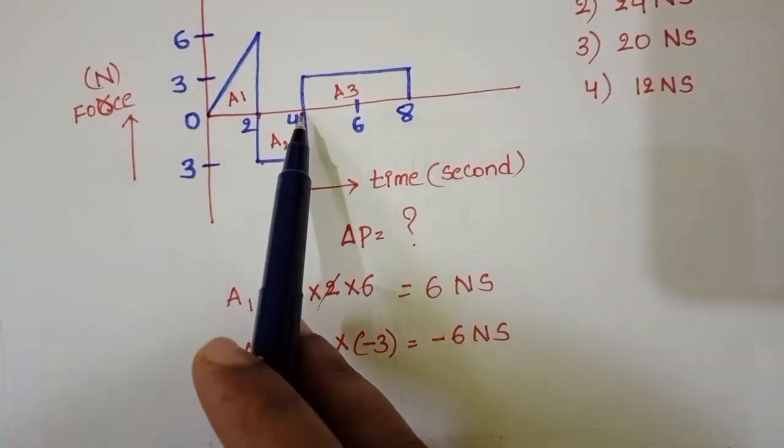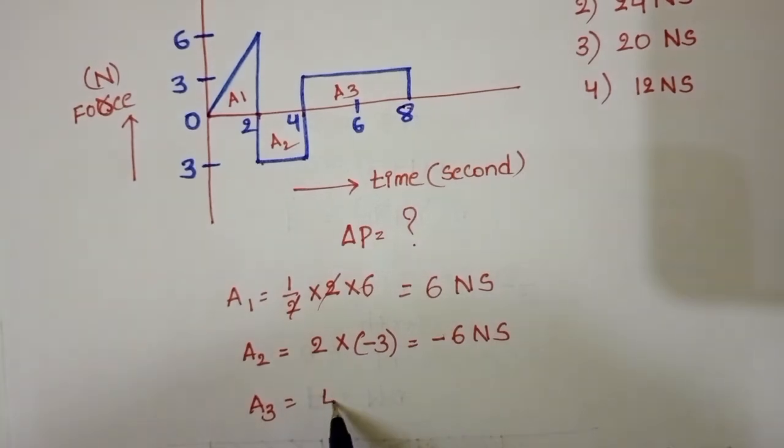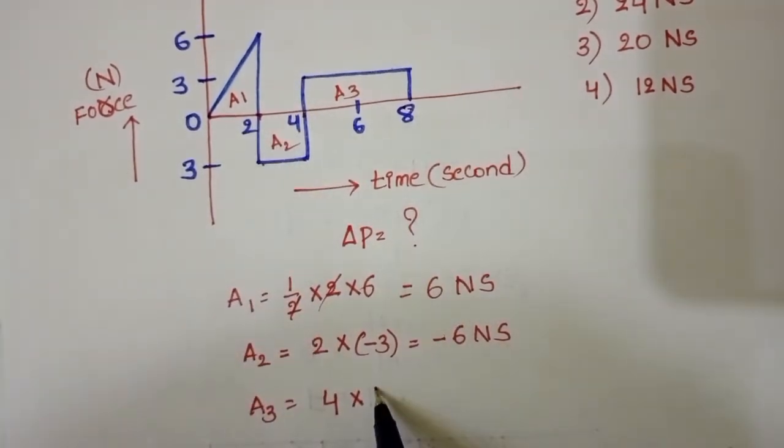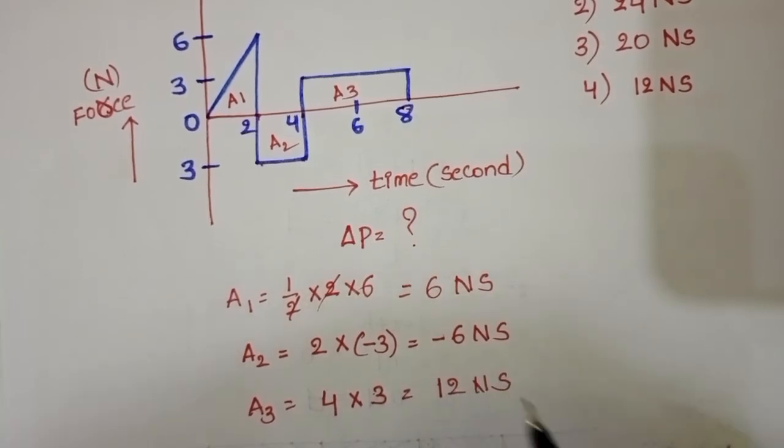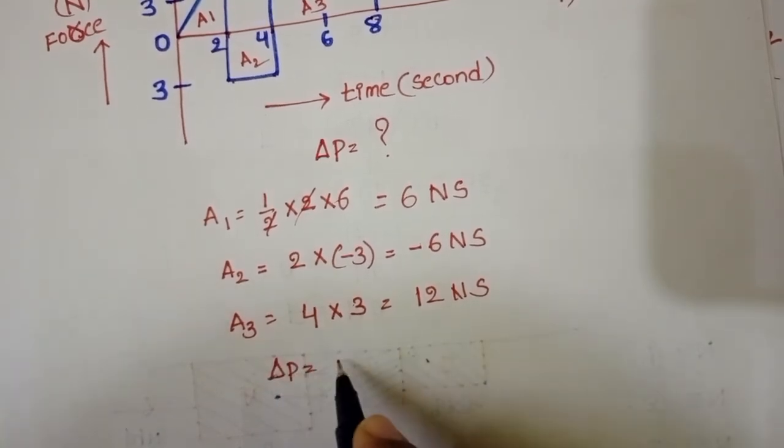A3 equals, time is from 4 seconds to 8 seconds. 8 minus 4 equals 4 into force is 3 Newton, which is 12 Newton seconds. Change in momentum equals...